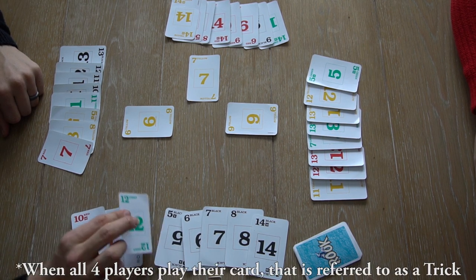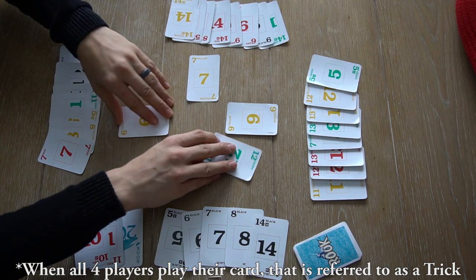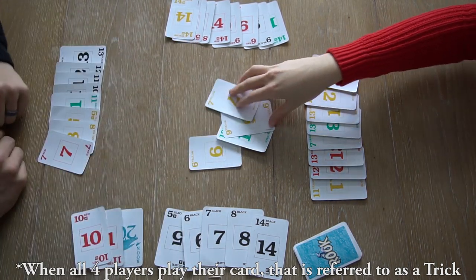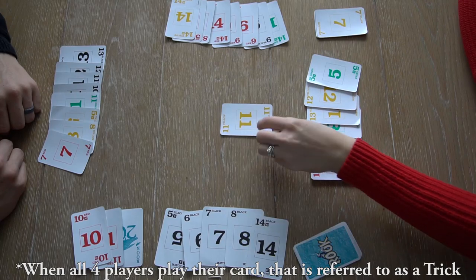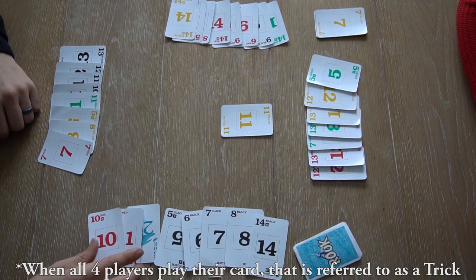Player 5 wins the trick, unless a trump color is put down or the rook is played. The person who wins the trick gets to lead the next one.